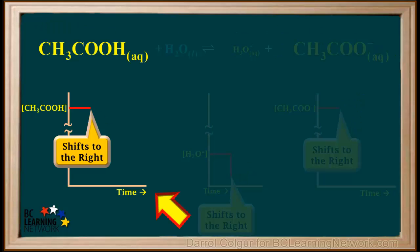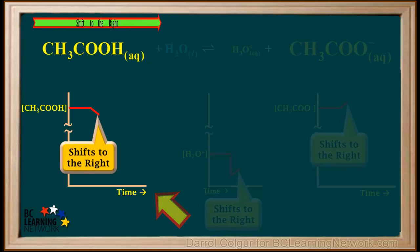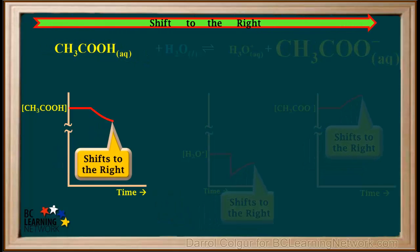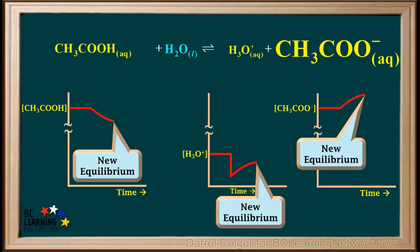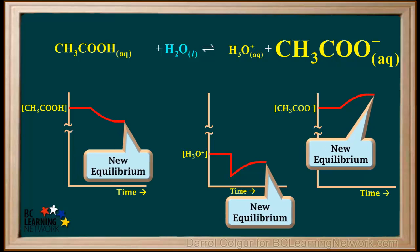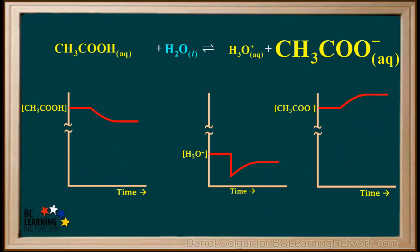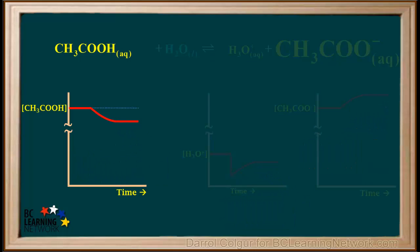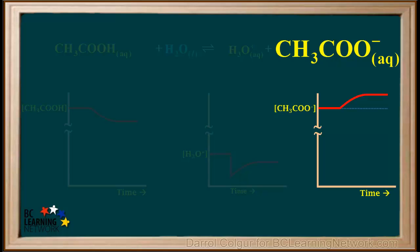Acetic acid is a reactant, so as the shift to the right occurs, its concentration will gradually decrease. When the shift to the right is complete, a new equilibrium is established, and as time continues, the concentrations of all three species remain constant and the lines in the graph are horizontal. In the overall process, the concentration of acetic acid showed a net decrease, and the concentration of the acetate ion showed a net increase.